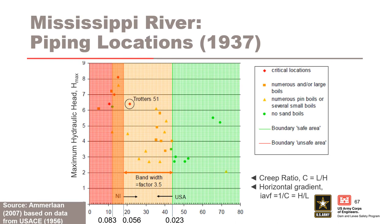This figure shows critical sample locations observed in 1937, 1947, and 1950 for levees along the Mississippi River. Numerous sand boils were observed at creep ratios L over H greater than 18, equivalent to an average gradient of less than 0.05. Horizontal gradients as low as 0.02 were estimated. Failure nearly occurred at Trotter's location. Typical critical vertical upward exit gradient in cohesionless soils is often thought to be around 1 where heave is concerned, but the magnitude of horizontal gradient that has led to backward erosion piping is much lower.